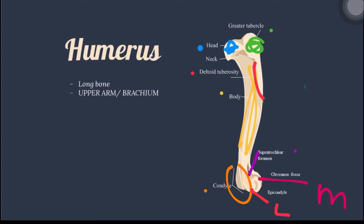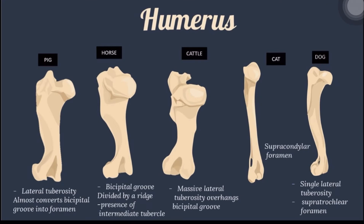The supratrochlear foramen can only be found in dogs. The humerus of pig has a lateral tuberosity that almost converts the bicipital groove into a foramen. In horse, an intermediate tubercle is present in the bicipital groove. In cattle, a massive lateral tuberosity overhangs the bicipital groove. In cats, it has an undivided greater tubercle and a supracondylar foramen through which the medial nerve and the brachial vessel pass. In dogs, a single lateral tuberosity is present.